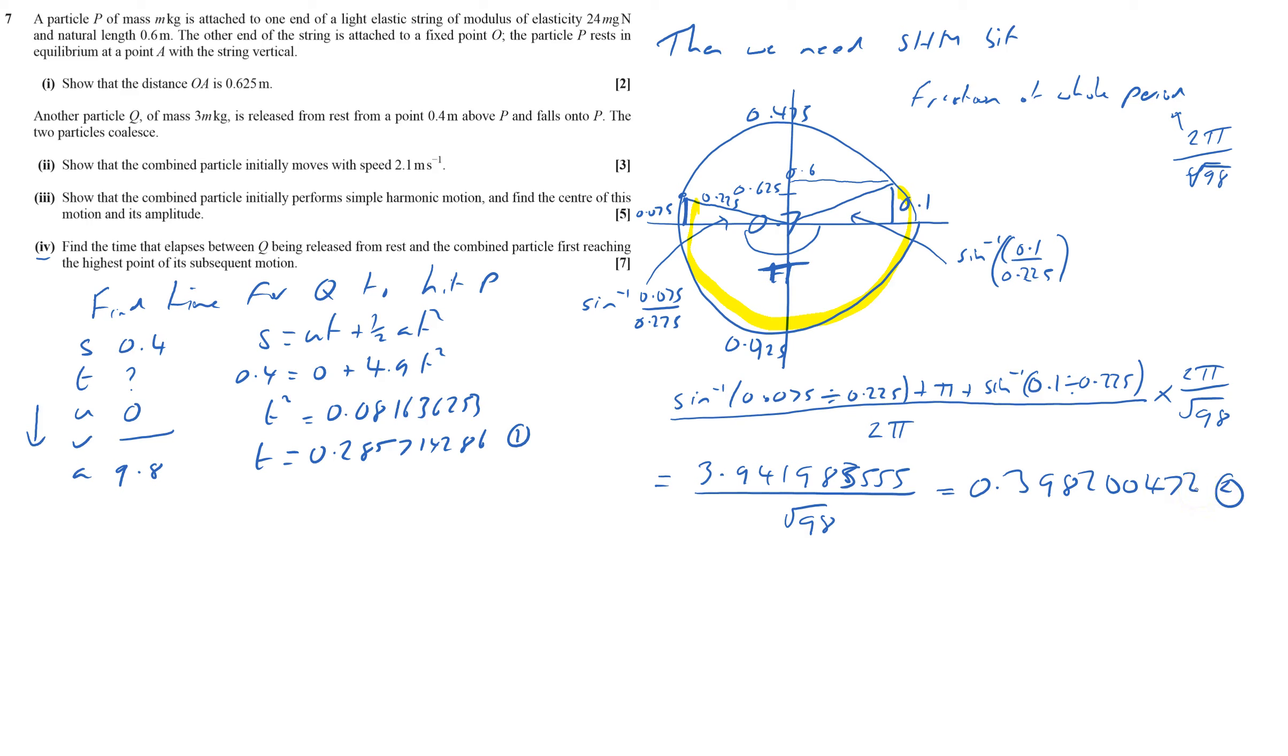And then finally the third part is when string is slack. First off I need to find the velocity when it starts here. So my extension will be 0.1, so when x equals 0.1 I use the nax equation. So v squared equals n squared a squared minus x squared.